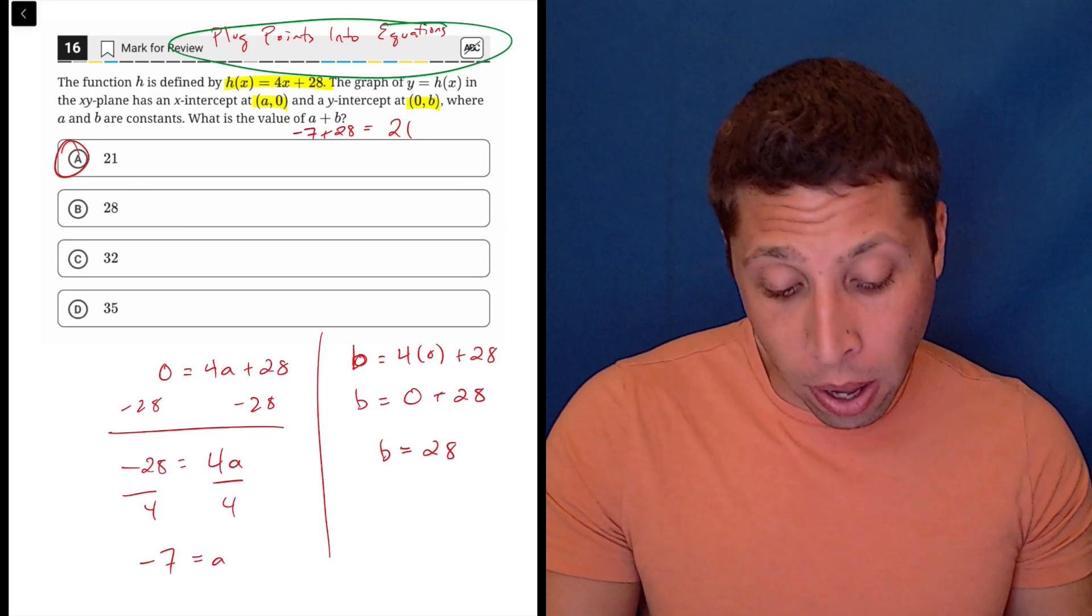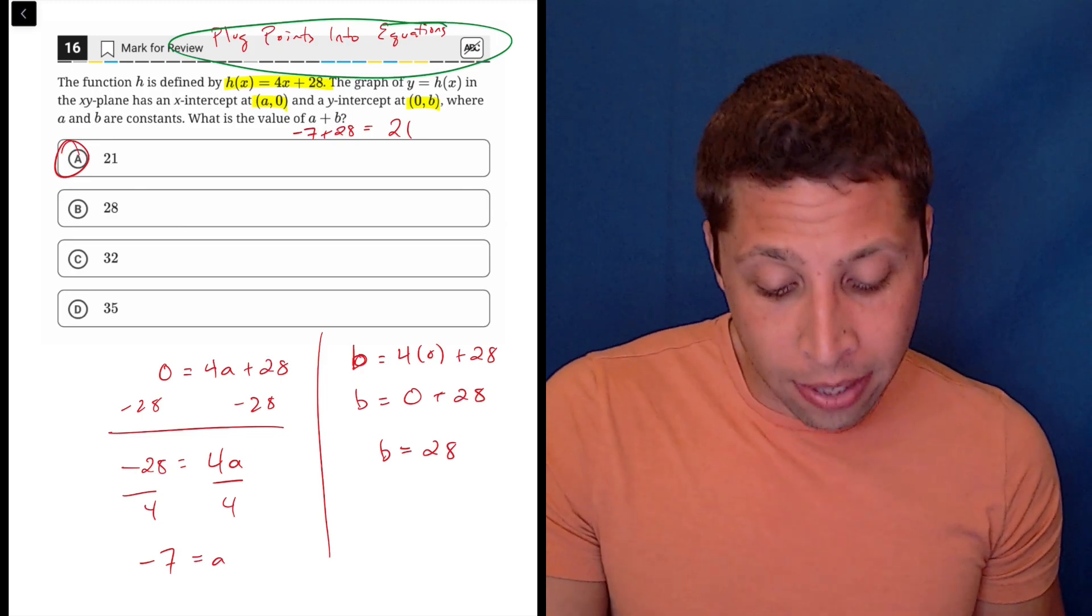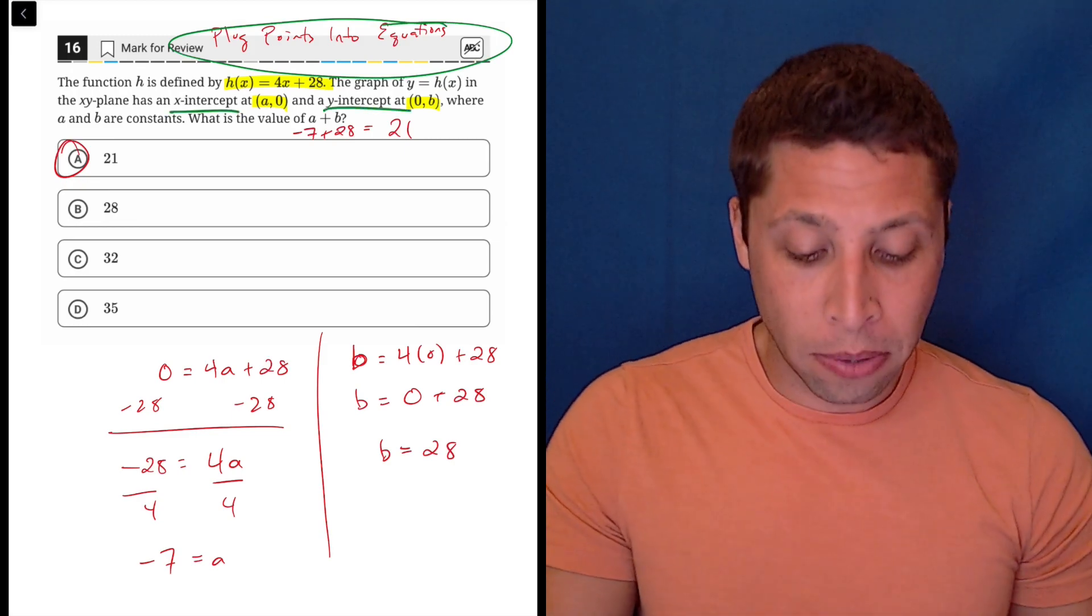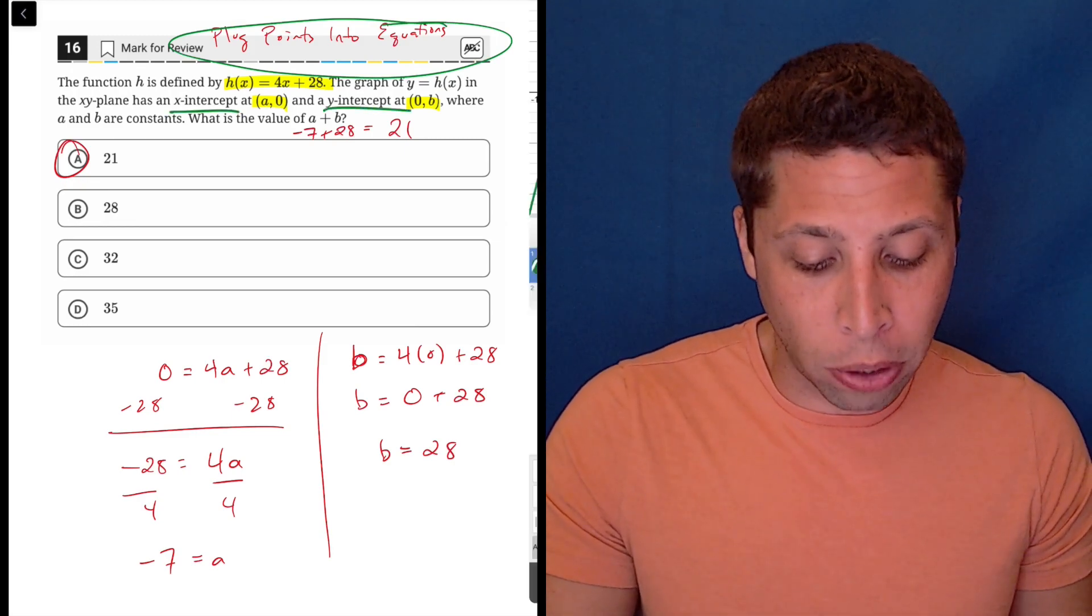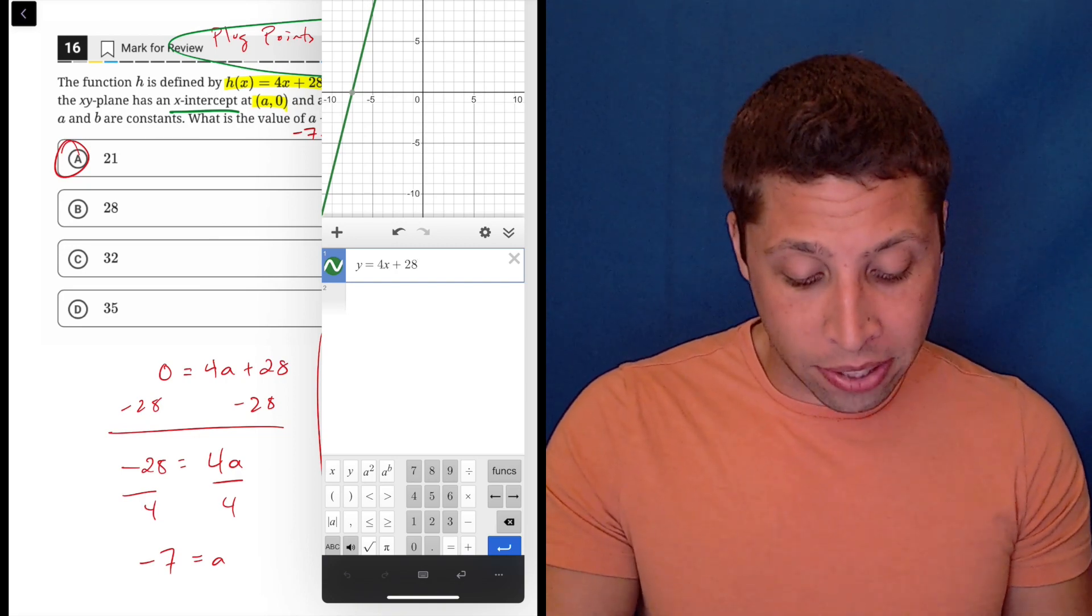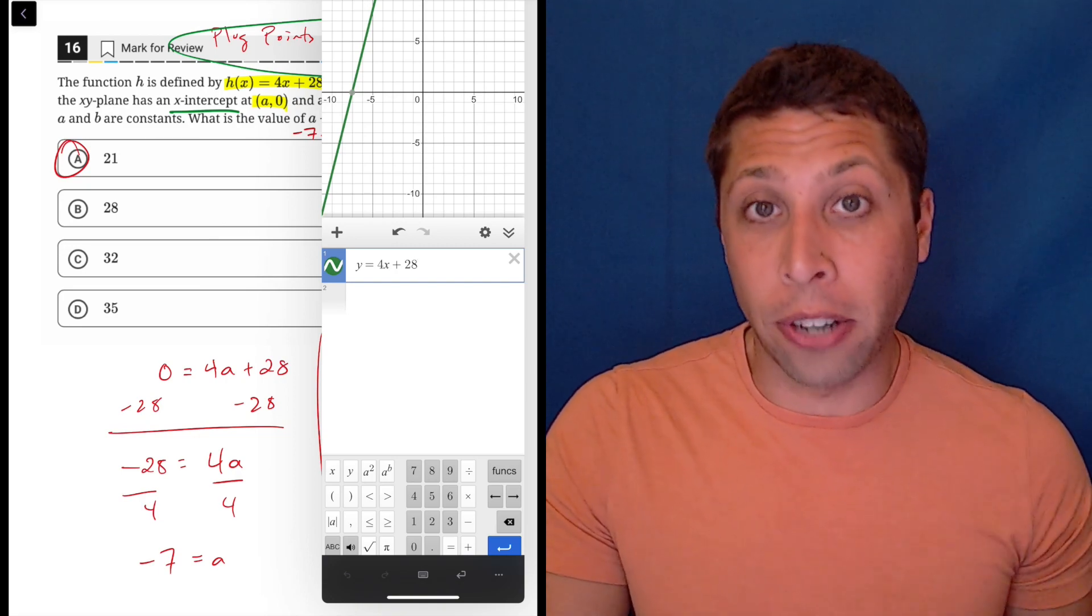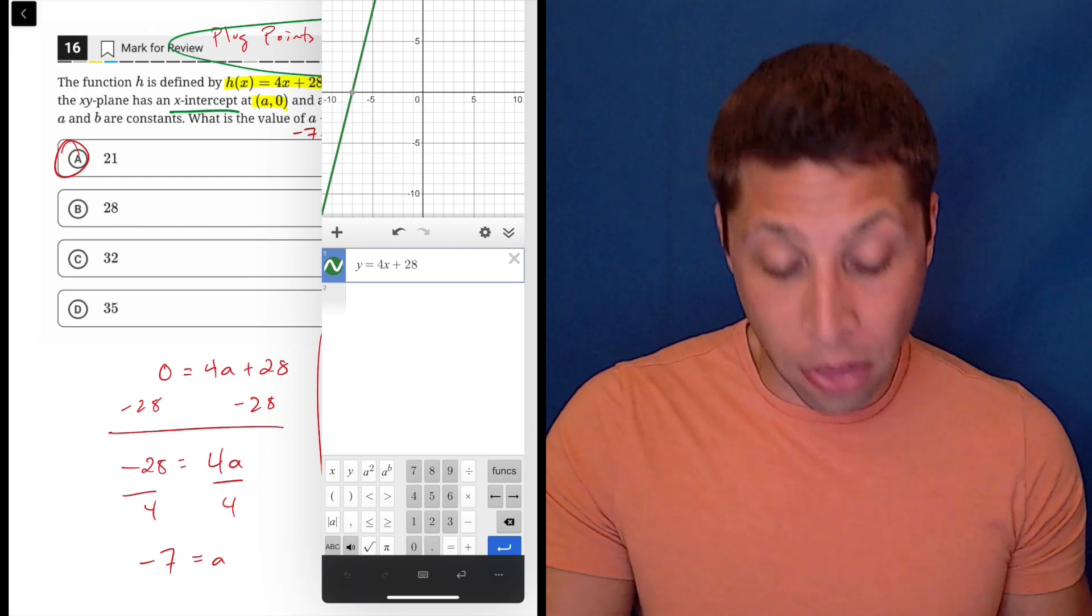If you were to graph it, they specifically tell us that these are the x and y intercepts. So we can just take h of x equals 4x plus 28 and graph it. The only change I made here is I got rid of the h of x because it's just easier to enter it as y, but it's still the same thing.